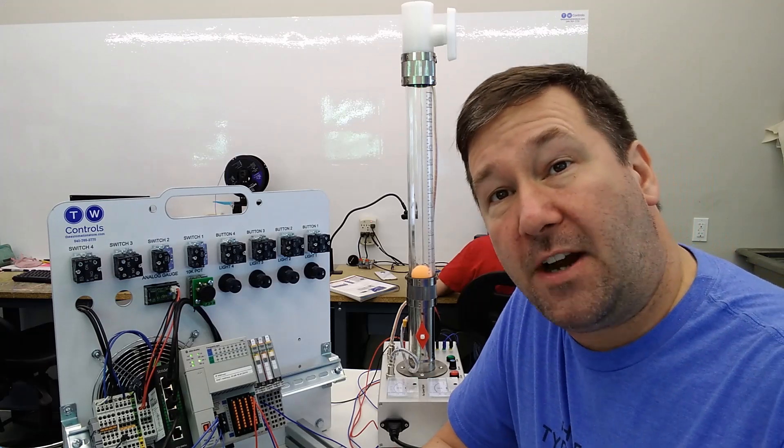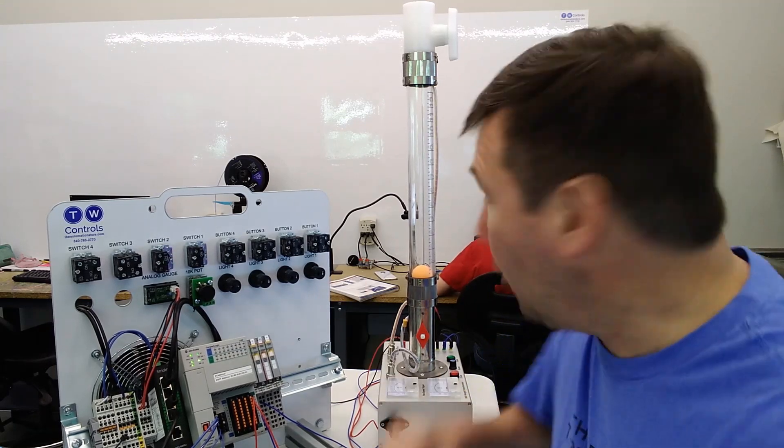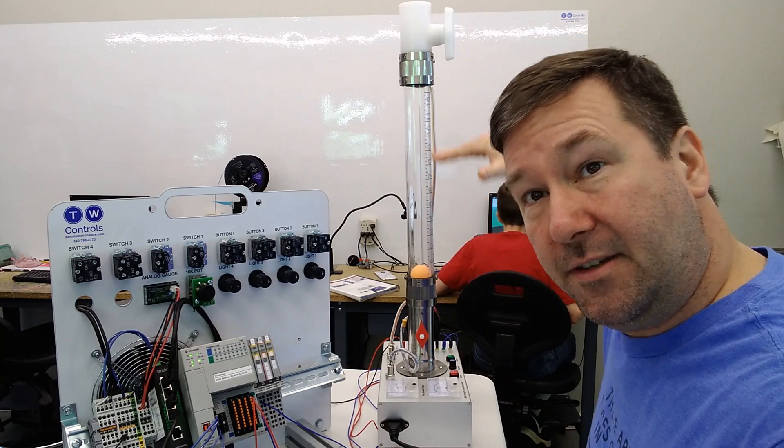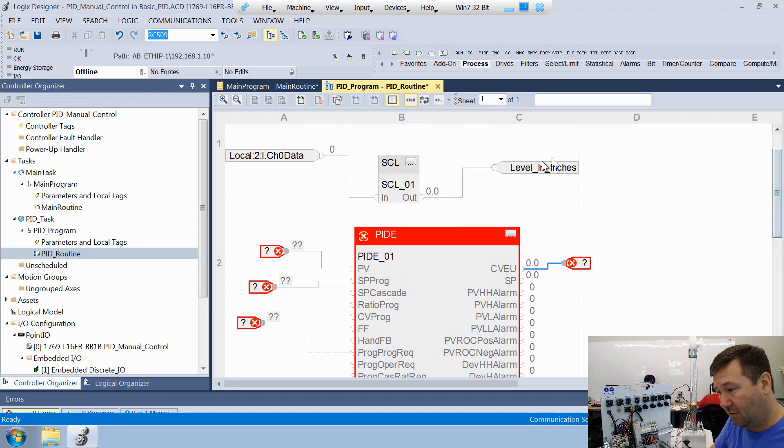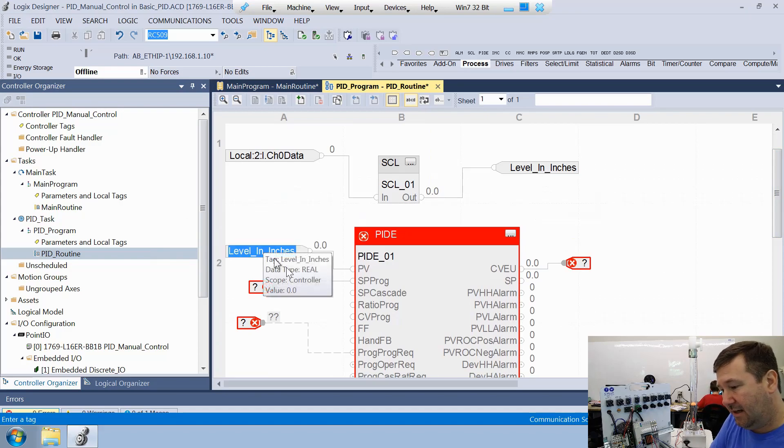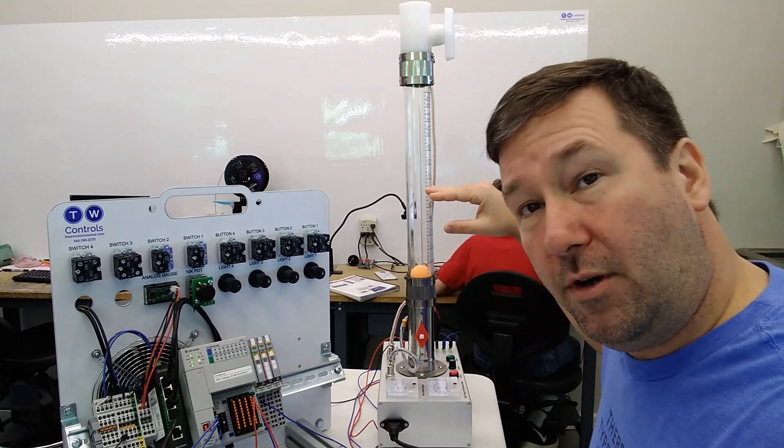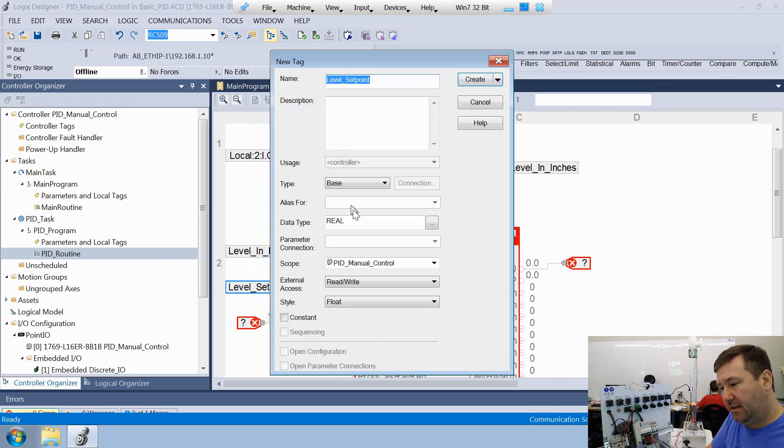Okay, so our process variable is the thing that we're trying to make the output force to be in a certain spot or our input. So I want my level to be, let's say six inches. So our process variable is this level and we've already scaled it. It's in this SCL instruction right above level in inches. So let's put that here. And then our SP probe, that is the set point that we're wanting. And we're going to create a tag for it. So let's call it level set point.